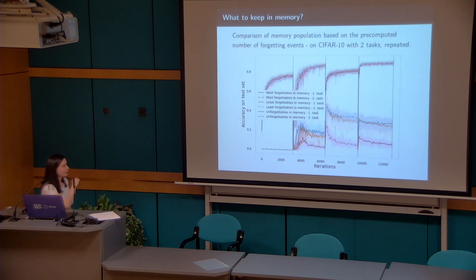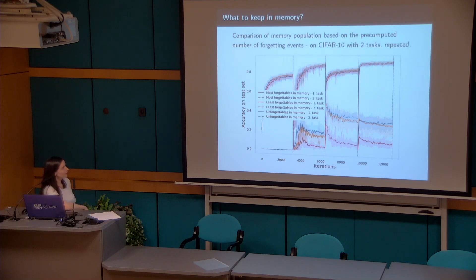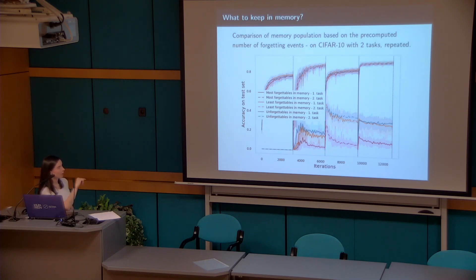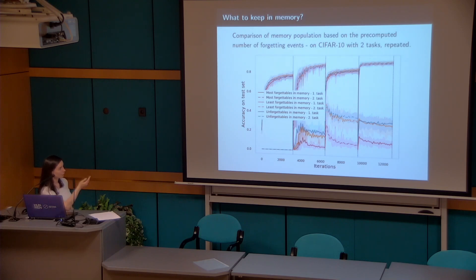Turns out that's wrong. Here is a continual learning experiment with two tasks on CIFAR-10, with four stages as we repeat the two tasks. The lines show accuracy differences across three scenarios: keeping easily forgettable examples in memory, keeping not-forgettable examples, or keeping hard-to-forget examples. It turns out that keeping the hardest-to-learn examples hurts final accuracy, while keeping the easily learnable ones helps the most.